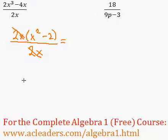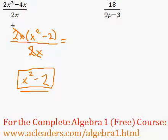So we have 2x over 2x and those can cancel out. Therefore, the answer is just going to be x squared minus 2, which is the fully simplified form of the first rational expression.